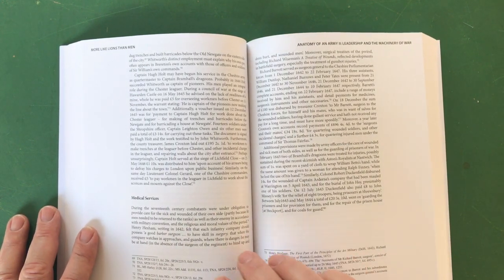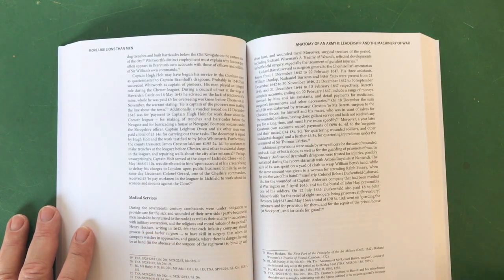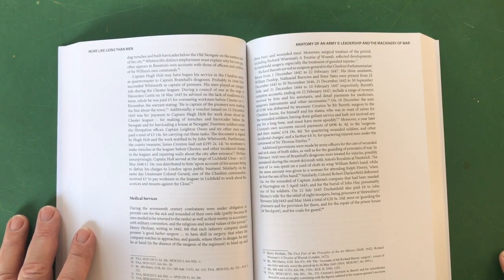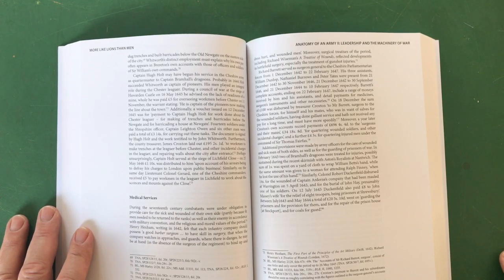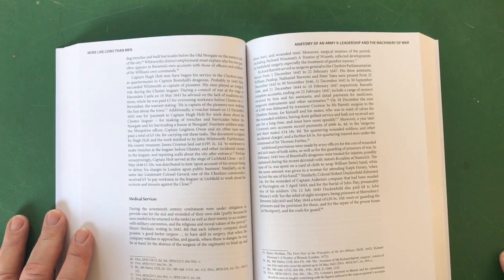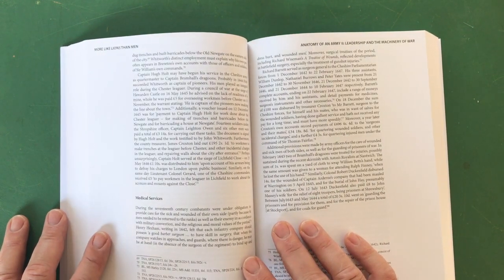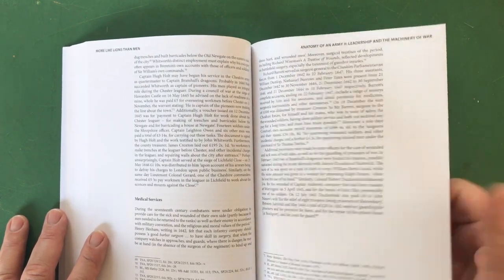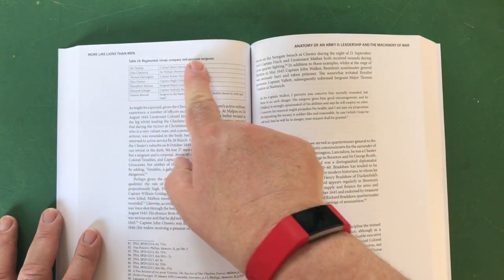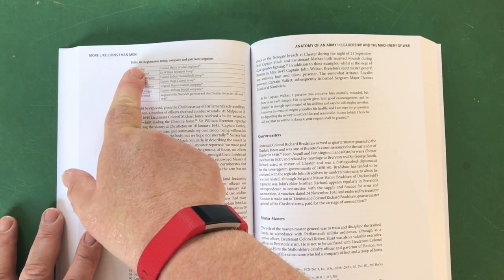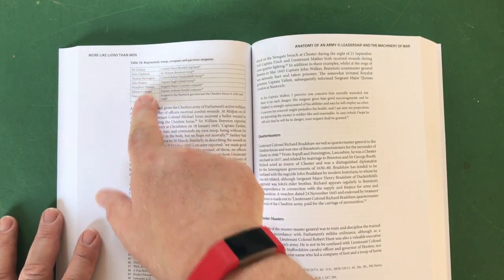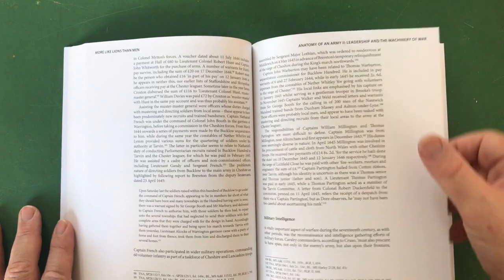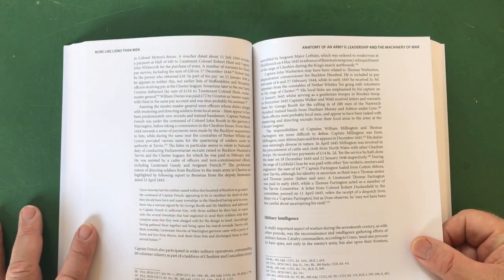We have people - here we go, Henry Hexam writing in 1642 felt that each infantry company should possess a good barber surgeon to have skill in surgery, that when the company watches in approaches and guards where there is danger he may be at hand in absence of the surgeon of the regiment to bind up and dress hurt and wounded men. There we are, so they were thinking about these things. It may be crude by our standards but there you go. And here we are, the names of the various surgeons: Mr. Dunlop, John Chadwick, Thomas Harrington and so on. The quartermasters, the muster masters.